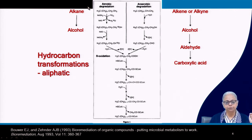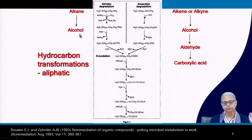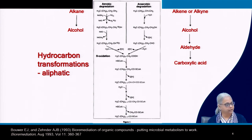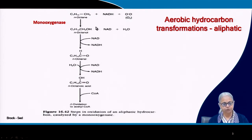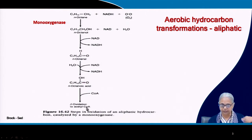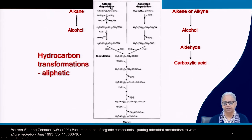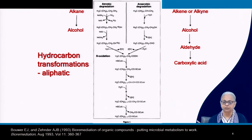Here we have a comparison between alkanes, alkenes and alkynes. Under aerobic conditions, alkanes are converted to alcohols — for example, octanol — which are further converted to various acids. These acids can enter the acetyl-CoA Krebs cycle and from there they will be completely mineralized. So aerobic biodegradation via beta oxidation leads to complete mineralization of alkanes.